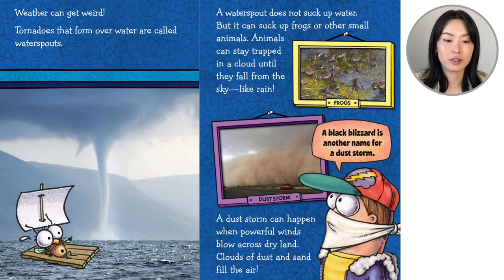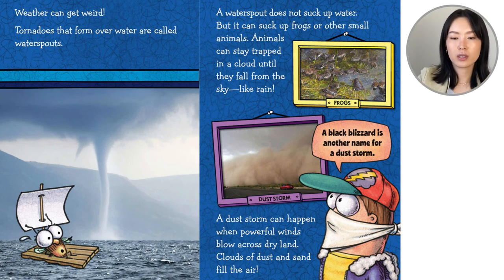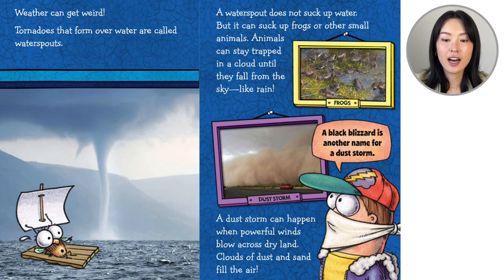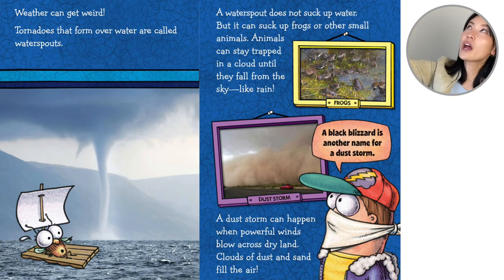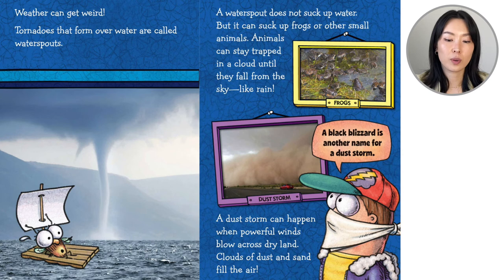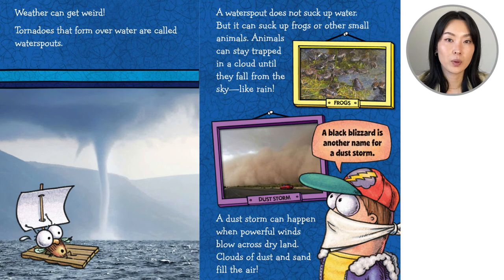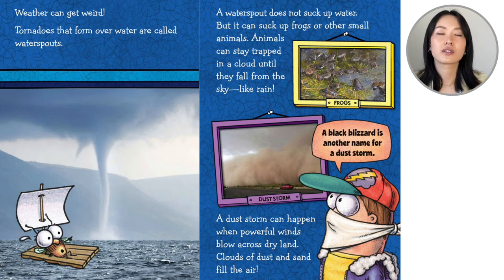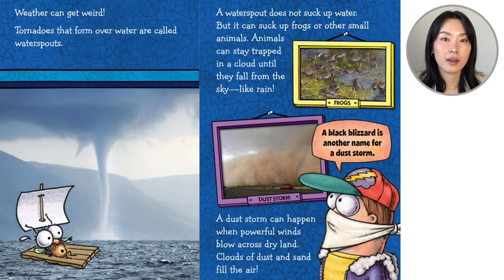Weather can get weird. Tornadoes that form over water are called waterspouts. A waterspout does not suck up water, but it can suck up frogs or other small animals. Animals can stay trapped in the cloud until they fall from the sky like rain. Can you imagine a frog sucked up and then it's raining frogs? A dust storm can happen when powerful winds blow across dry lands — clouds of dust and sand fill the air. It'd be really hard to see. Buzz is wearing a mask here so that the dirt doesn't go into his mouth. A black blizzard is another name for a dust storm.